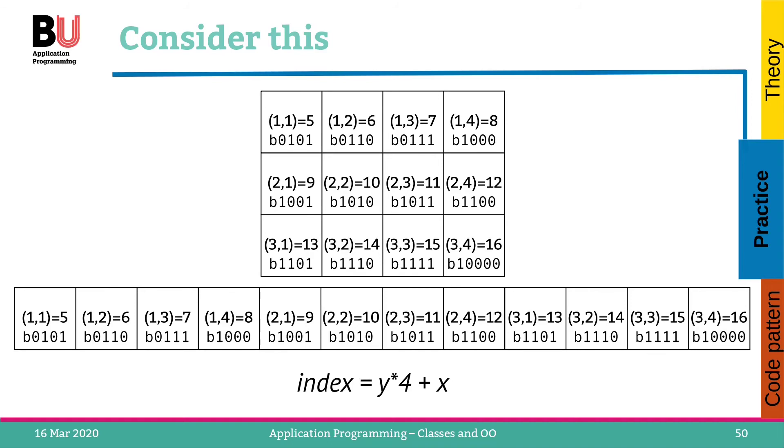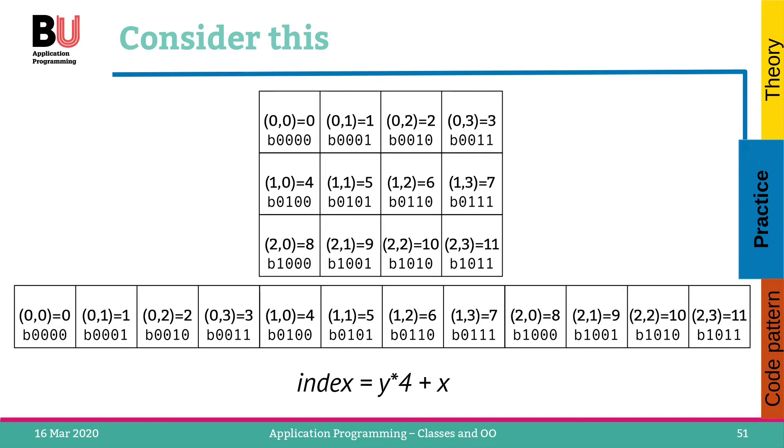Of course, this is only true if you have a power of two width of your array. If you do row major versus column major, then obviously this is why we want to kind of look at it. Starting with zero makes things a lot easier in some way.